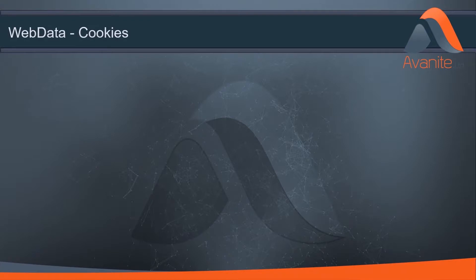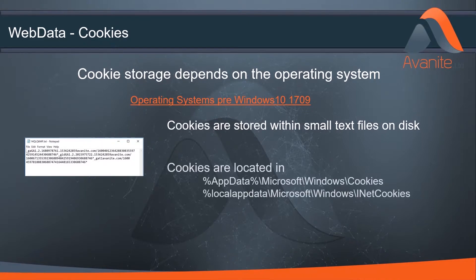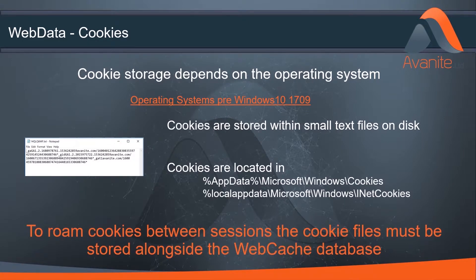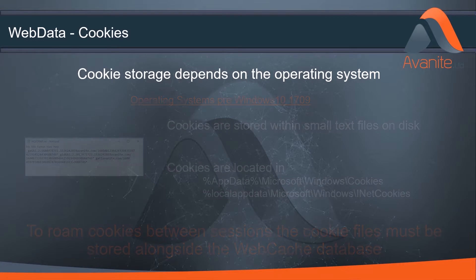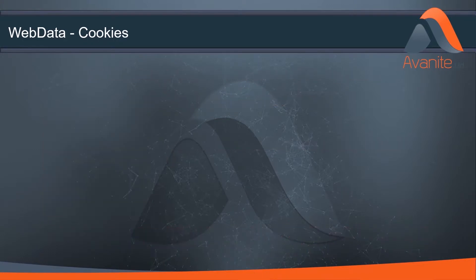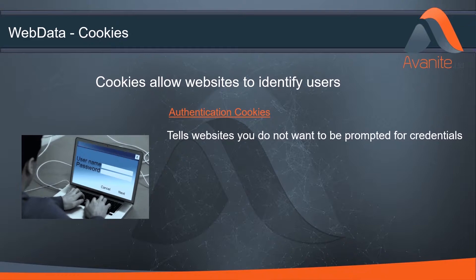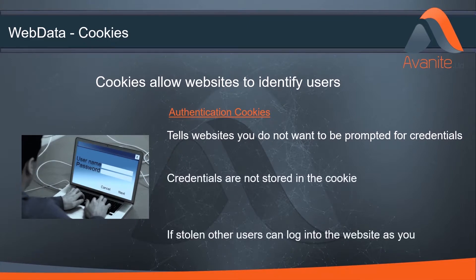Cookies are one of the more familiar forms of web data. In server operating systems and desktop operating systems up to Windows 10 1709, cookies were stored as small files on disk. Since Windows 10 1709, they have now moved completely within the web cache database. Each cookie delivered has a unique identifier, which allows the website to recognize the user across multiple sessions. Authentication cookies tell a website that you don't want to be prompted for credentials, but automatically logged in according to that unique ID within the cookie.